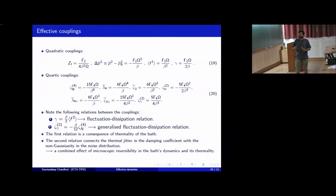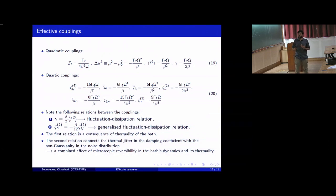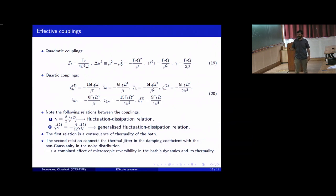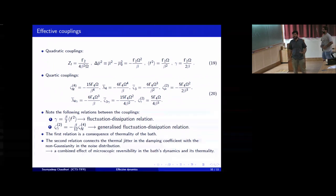This fluctuation-dissipation relation ensures that the particle eventually thermalizes in the case of the quadratic effective theory. The second relation is between the thermal jitter in the damping coefficient and the non-Gaussianity in the noise. This is a combined effect of microscopic time reversal invariance in the bath's dynamics and its thermality.